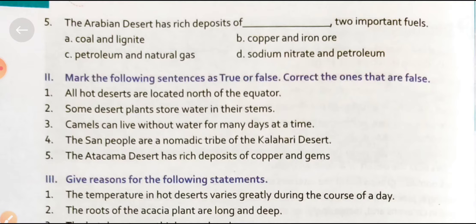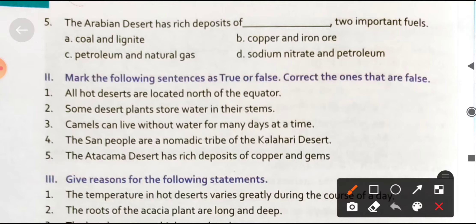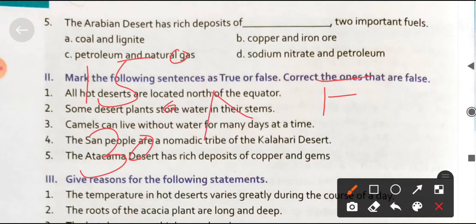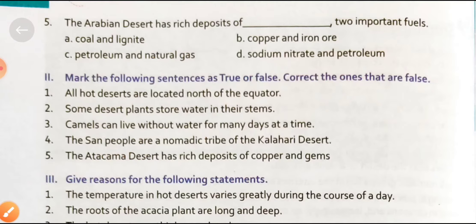First statement: 'All hot deserts are located north of the equator.' This statement is false, because all the desert regions of the earth are located between 15 degrees to 30 degrees in both hemispheres — northern and southern hemisphere.